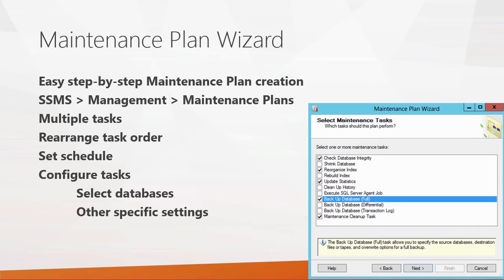In SQL Server Management Studio, you expand the management node, then the maintenance plans node, and right-click that node to run the maintenance plan wizard. The wizard allows you to select multiple tasks to include in your maintenance plan. You can have one maintenance plan that does a number of things, or you can have multiple maintenance plans, each taking a more segregated and isolated approach to management.